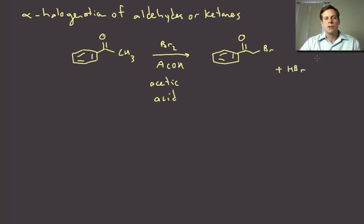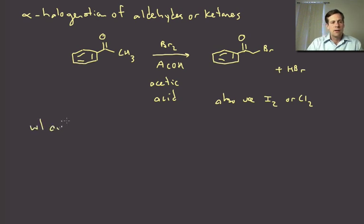And what that then gives us is a very nice conversion to the alpha brominated ketone. And then the side product here is going to be HBr. Okay. So that works really well. And by the way, we can also use iodine or chlorine, chlorine gas would work here too, to get those halogens. Okay. Now in the case of the acid catalyzed reaction with acid, this stops after one halogenation.